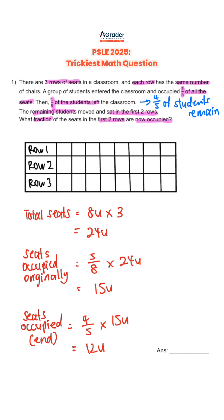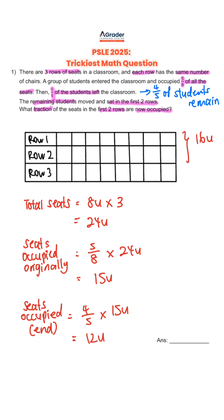In the end, we know that there are 12 units of students, and they are going to be sitting in the first two rows. In the first two rows, we can see that there are 16 units in total. So our last step is to put 12 units over 16 units, and then we simplify this by dividing by 4. That's how we get 3 quarters as the final answer.